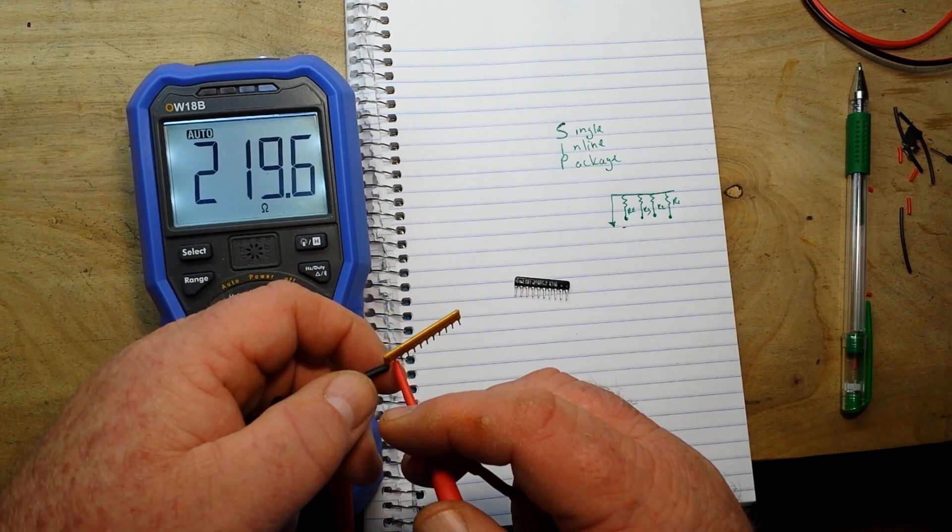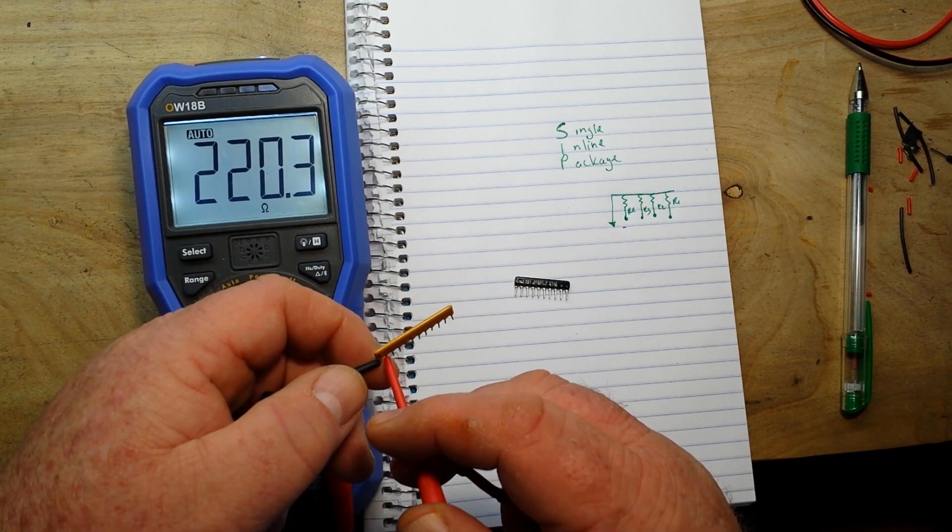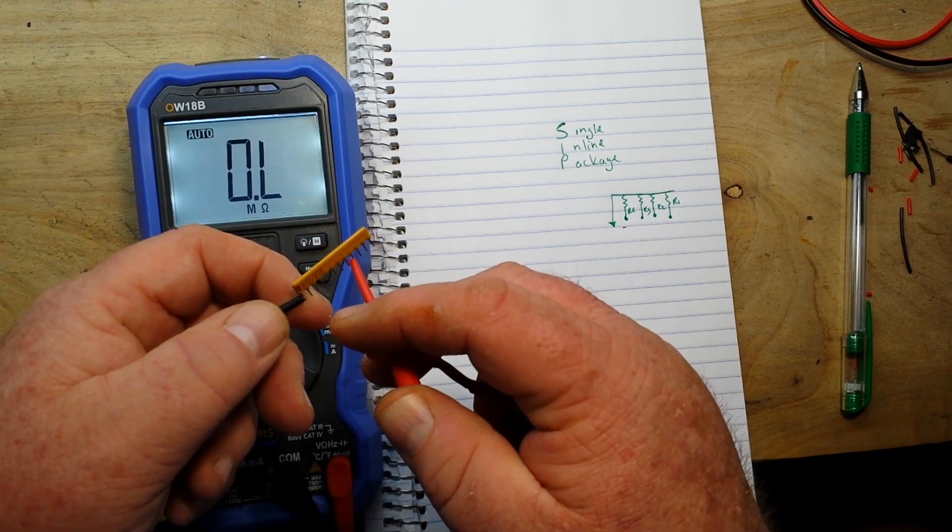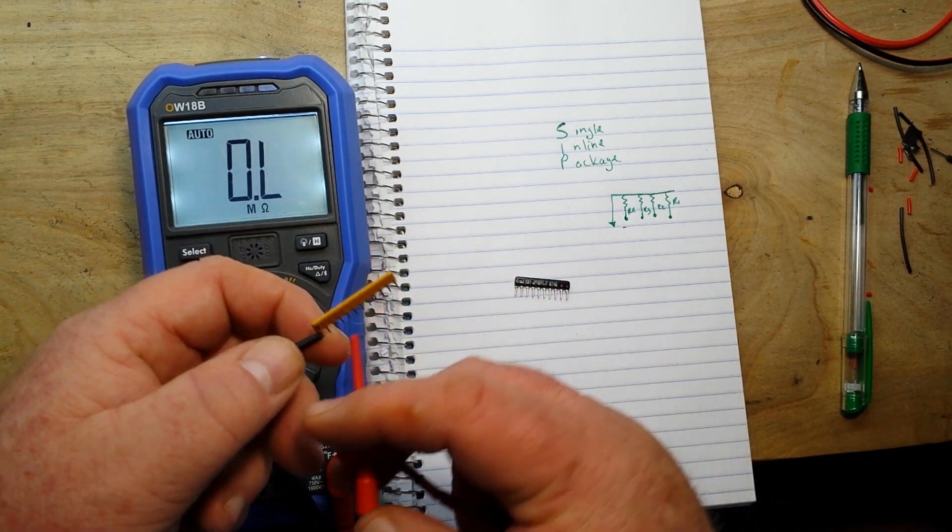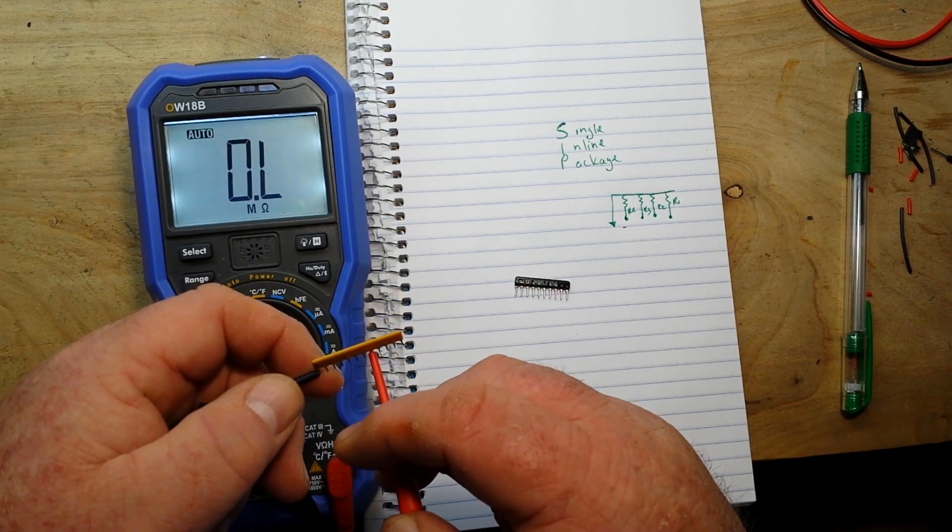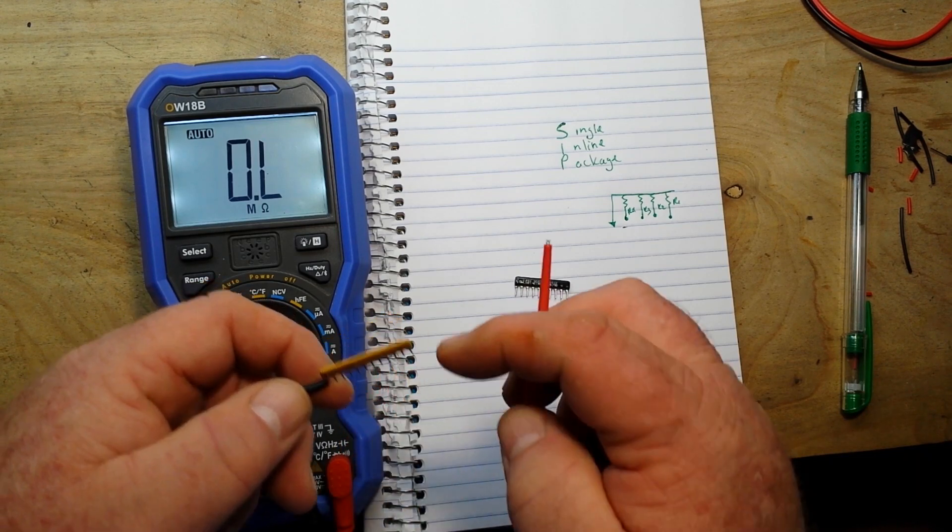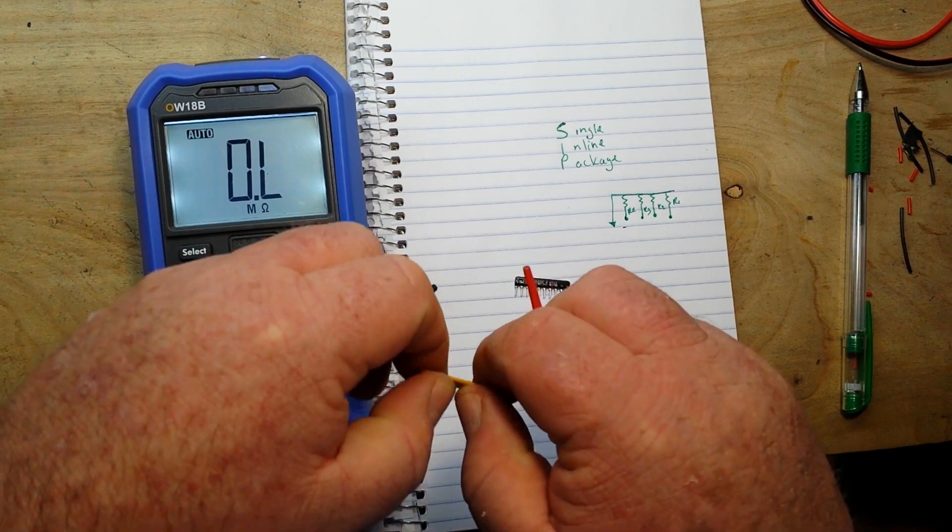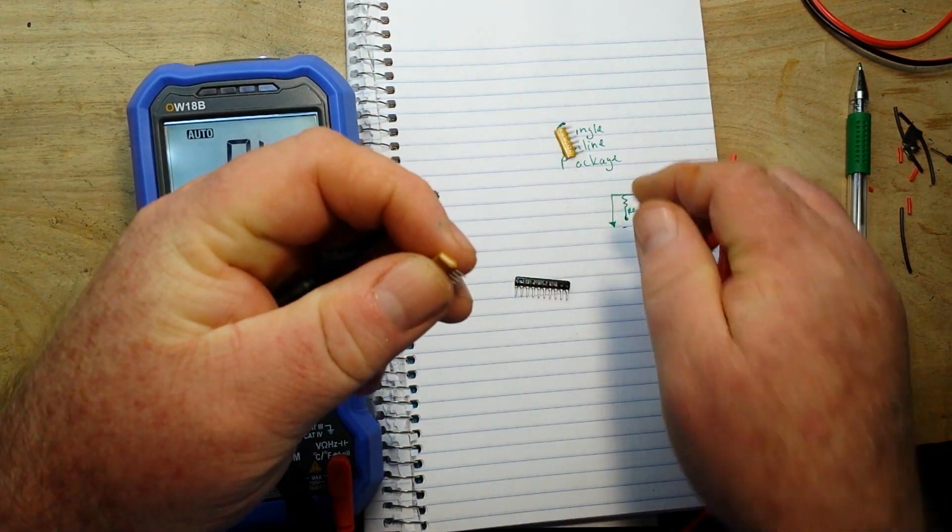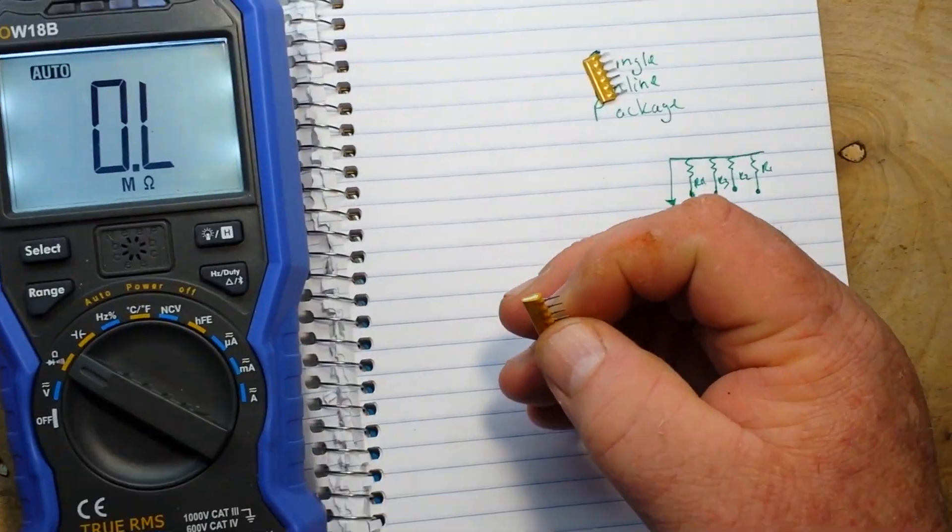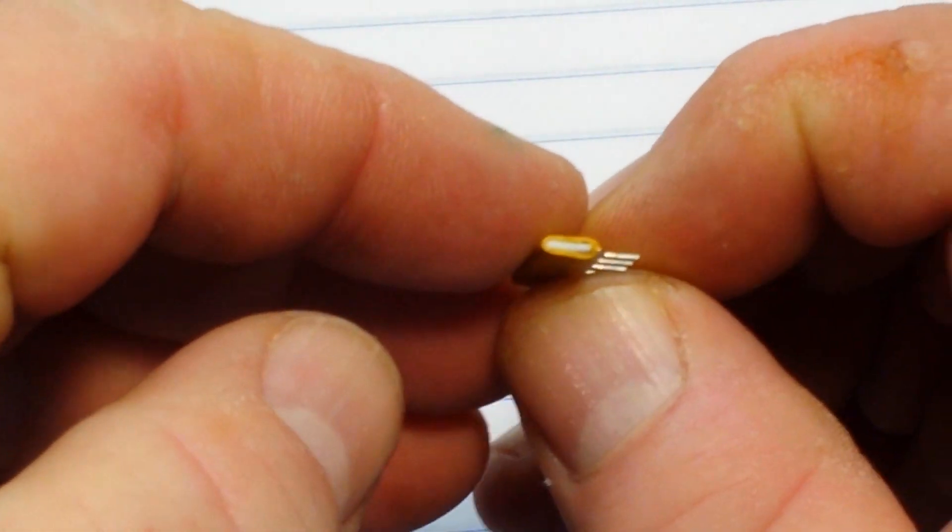So if we clip onto our common pin down here and we go to the first resistor in the network, you see we get 220.4 ohms. But if we move out we get nothing. These little micro grabbers are tiny and my eyes are old. So yeah, this is broken right after that first resistor.